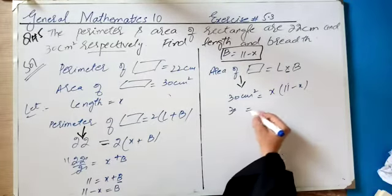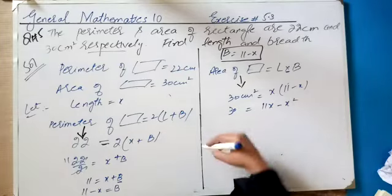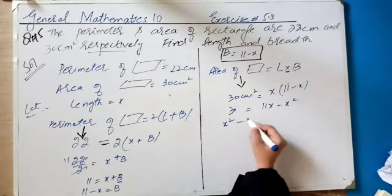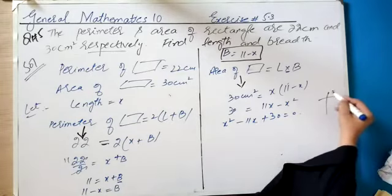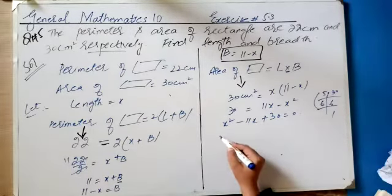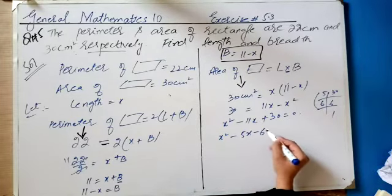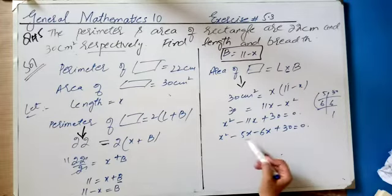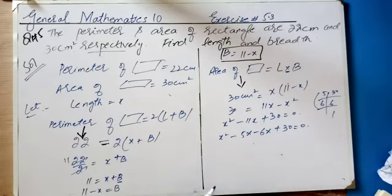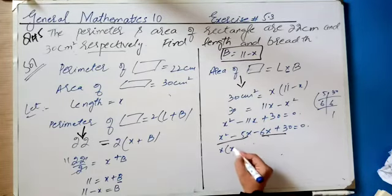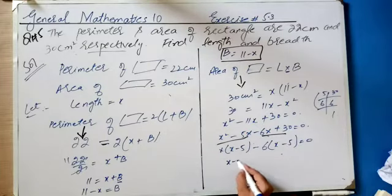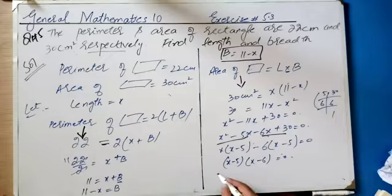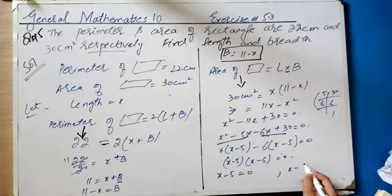Now solve it: 30 = 11x − x². Transposing, changing sign: x² − 11x + 30 = 0. Factoring — 5 × 6 = 30, 5 + 6 = 11 — so x² − 5x − 6x + 30 = 0. Taking common factors: x(x − 5) − 6(x − 5) = 0, giving (x − 5)(x − 6) = 0. Therefore x = 5 or x = 6.